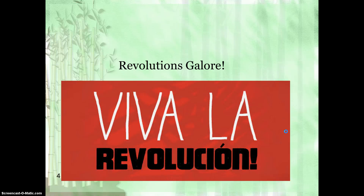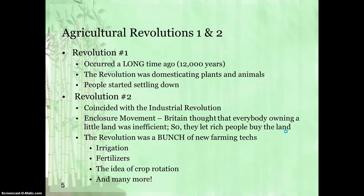Since we're talking about agricultural history, you can't avoid revolutions. Let's move on to the four agricultural revolutions. Revolution one is also called the Neolithic Revolution, and it occurred about 12,000 years ago. The main change was shifting from hunting and gathering to domesticating plants and animals. At this point, people started settling down, taking roots and putting them into the ground, and domesticating animals for their own uses.